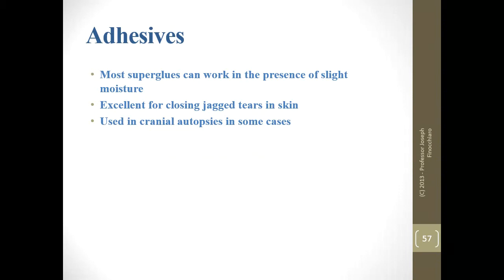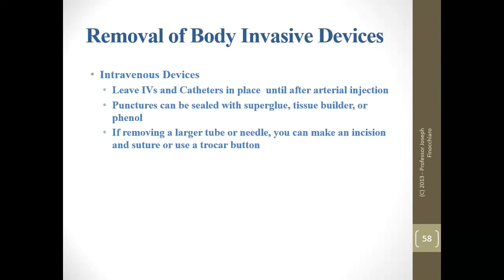Outside of thread, adhesives are your second option. If working on infants, they may be preferred to close things up instead of thread. Most superglues work in the presence of slight moisture — wet the area slightly for best effect. Excellent for closing jagged tears and sometimes used for cranial autopsies. Don't touch IVs until after you're done embalming — leave them in place. Punctures can be sealed with superglue, tissue builder, or phenol later. If removing something larger, put a trocar button in it — for a drain catheter, snip it off and plug the hole with a trocar button or use a purse string.